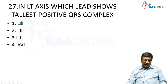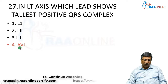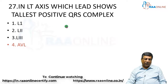L1 is a horizontal lead, L2 is an intermediate lead, L3 is the right-sided lead, and AVL is the left-sided lead. So in left axis, AVL is supposed to show the tallest positive QRS complex, and L3 will show the deepest negative QRS complex.